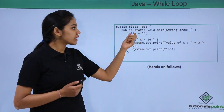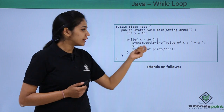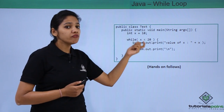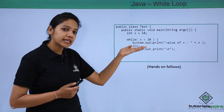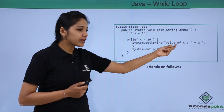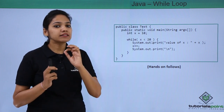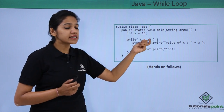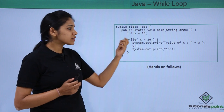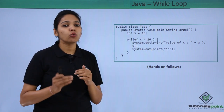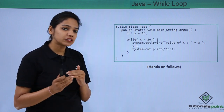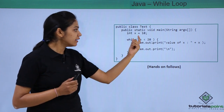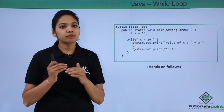In our example, it first checks if 10 is less than 20 — prints 10, then increments x to 11. It goes back, checks if 11 is less than 20, prints 11, and these iterations follow until the condition becomes false. It prints values up to 19. When x becomes 20, it checks: is 20 less than 20? No — the condition is false, the program exits the loop and executes any statements written after the while loop's closing curly brace.